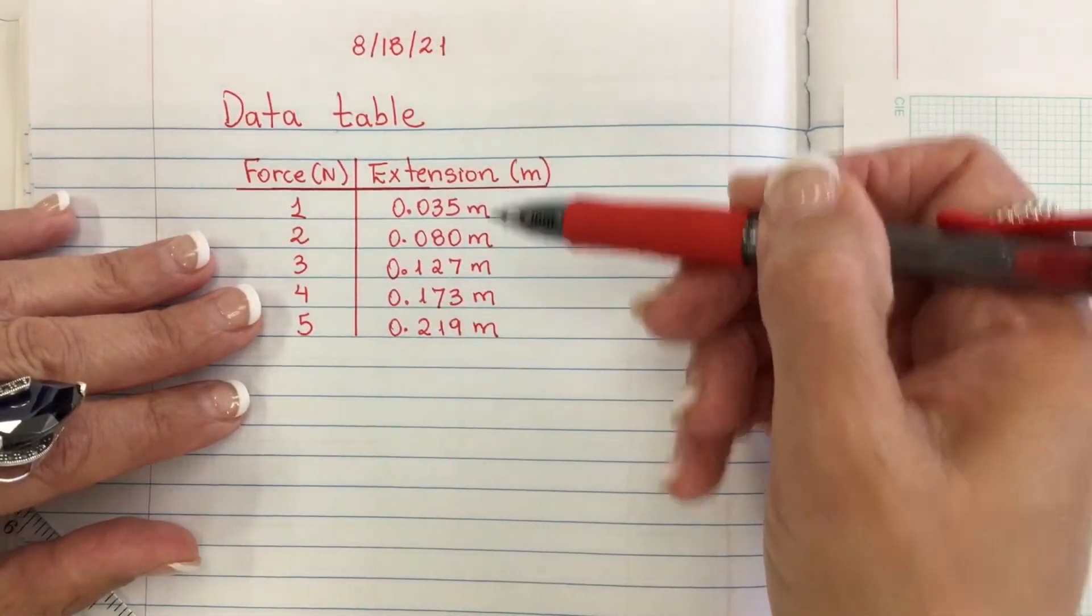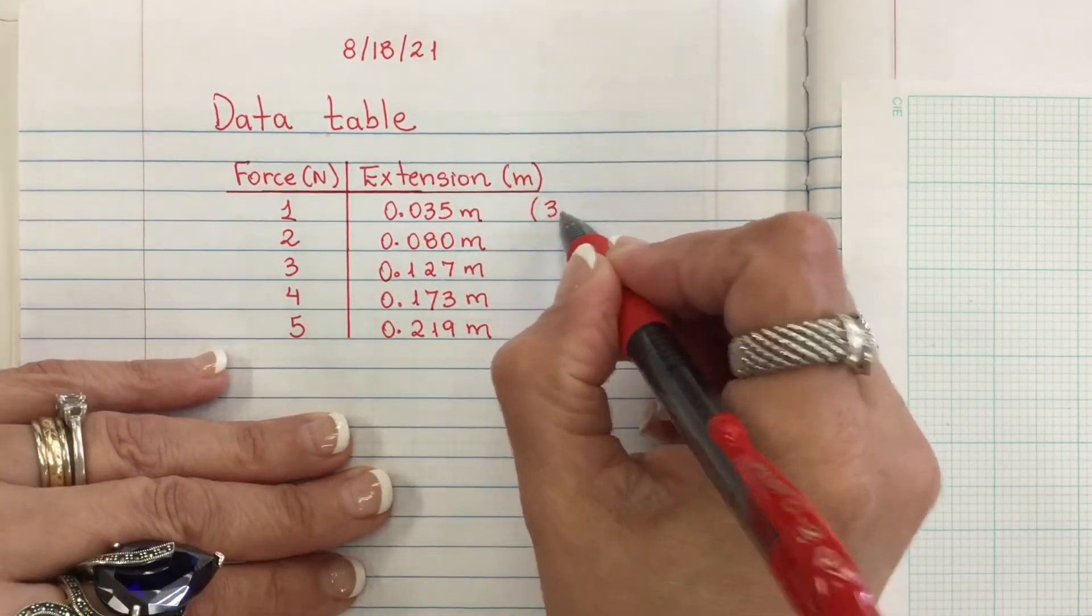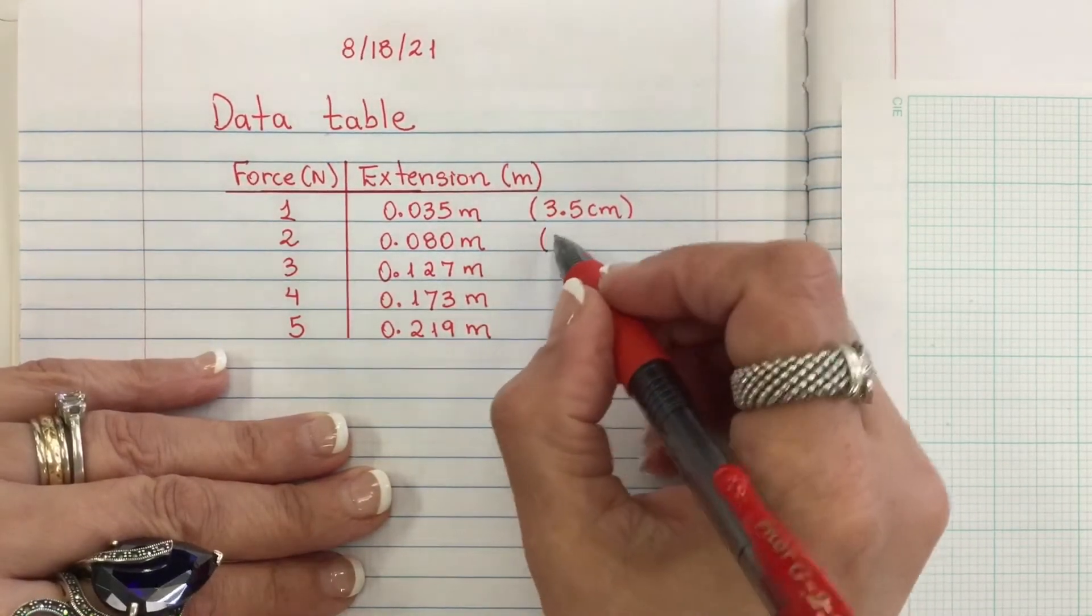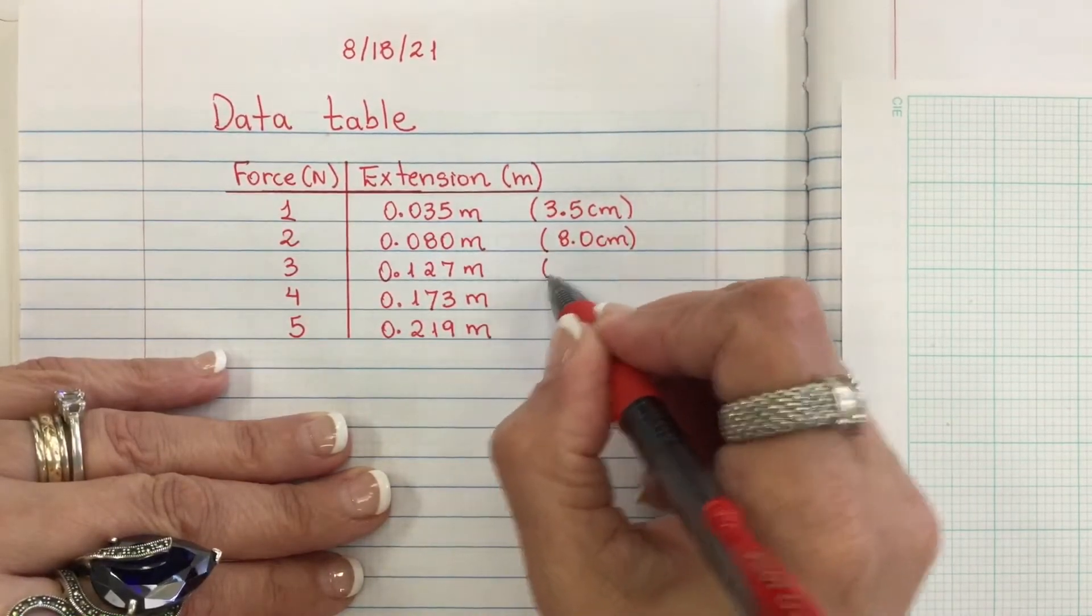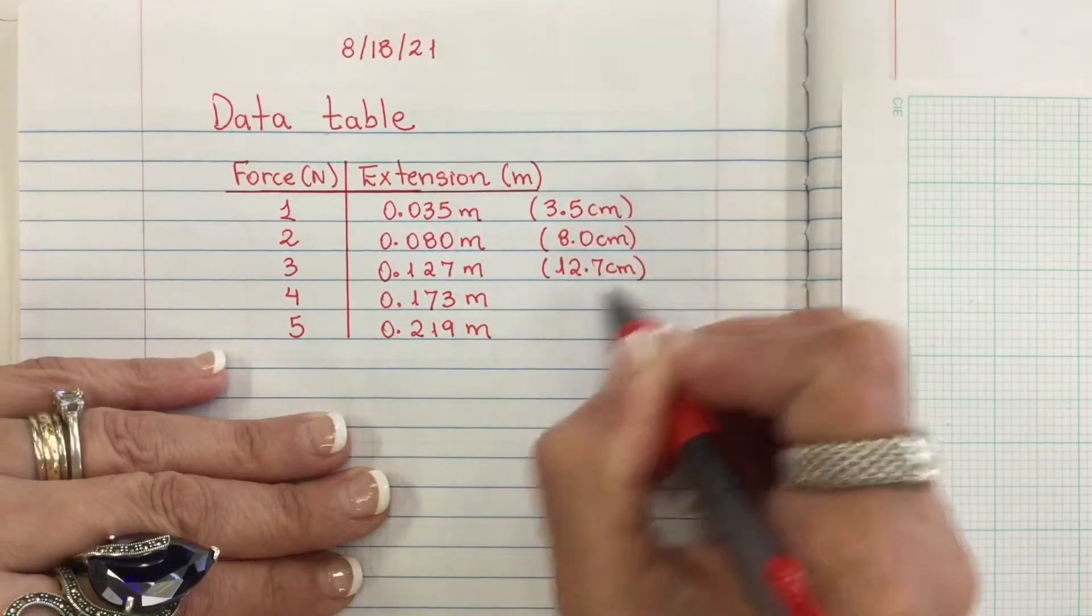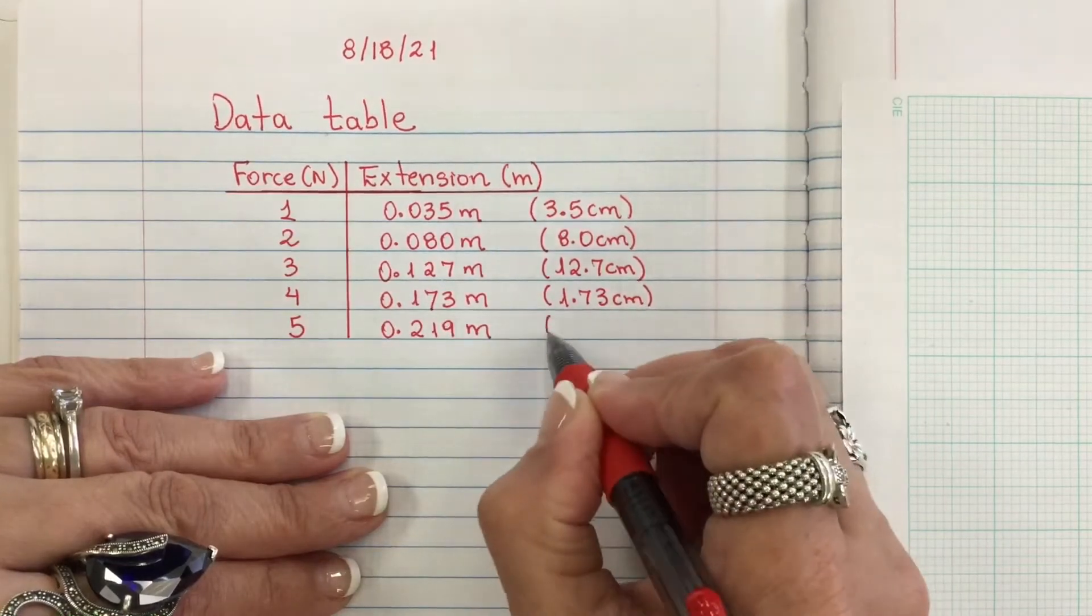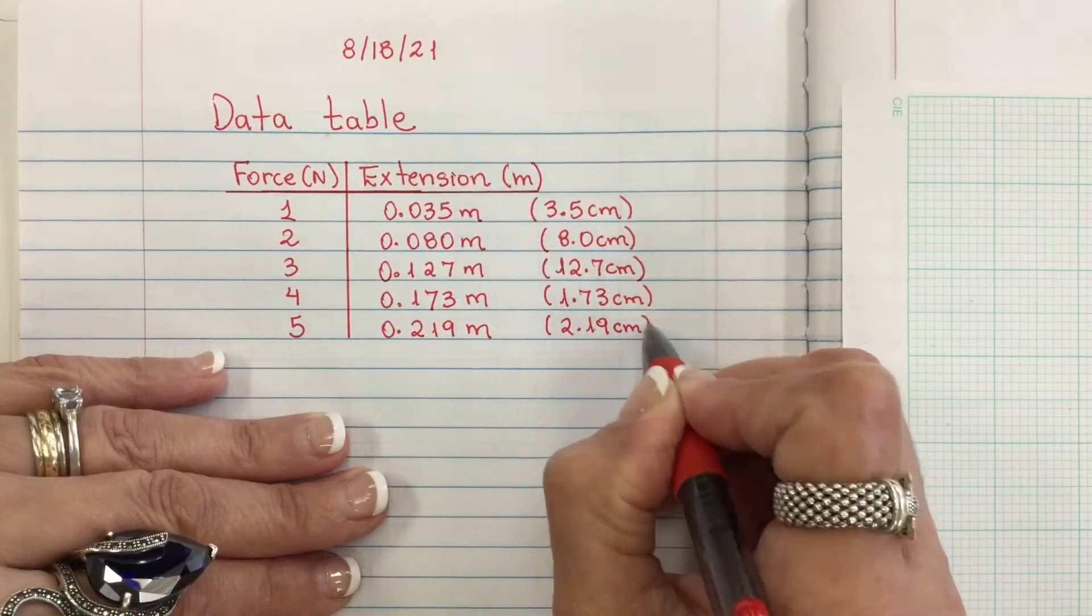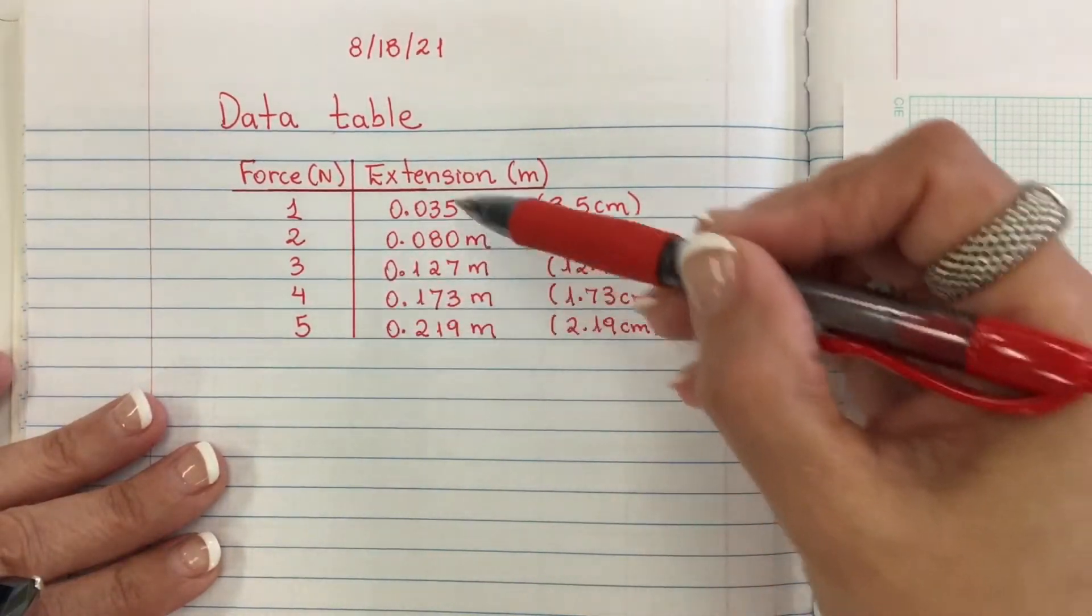Converting these values to centimeters, that will be 3.5 centimeters, 8 centimeters, 12.7 centimeters, 17.3 centimeters, and 21.9 centimeters. However, I'm going to plot the graph using the values in meters.